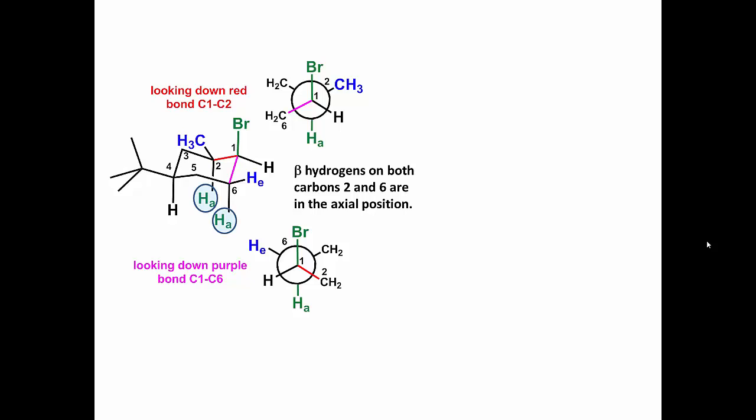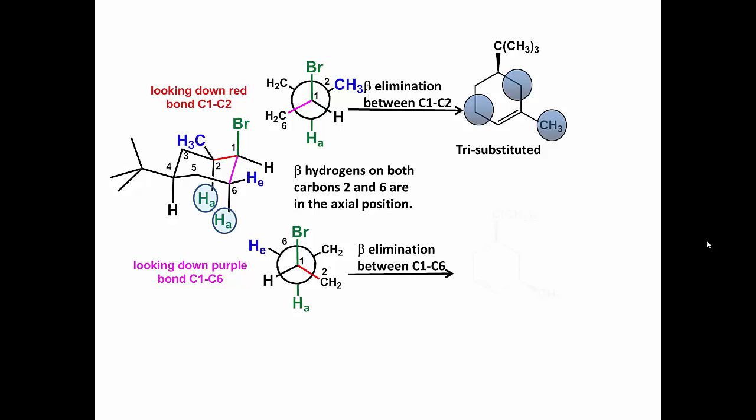Elimination between carbons 1 and 2 produces a tri-substituted alkene. Elimination between carbons 1 and 6 produces a disubstituted alkene.